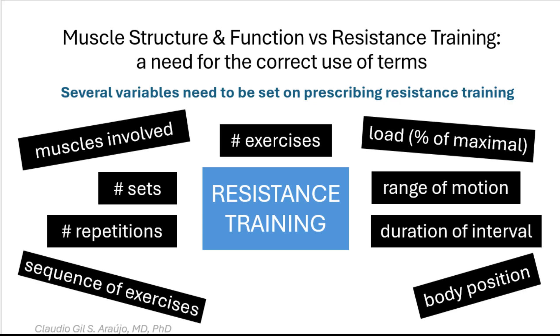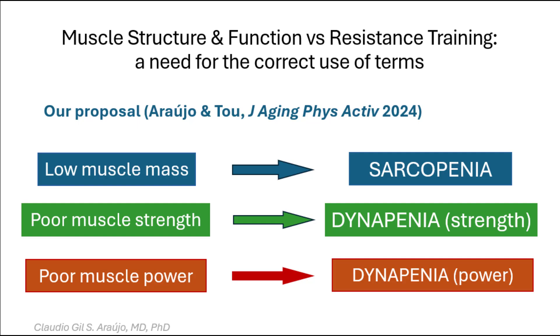On prescribing resistance training, there are several variables to consider. We propose that exercise terminology should adhere to the precise specification of the muscle variables being targeted: sarcopenia, meaning low muscle mass; or dynapenia, meaning low muscle strength; or low muscle power.